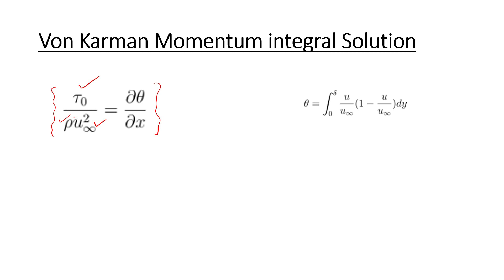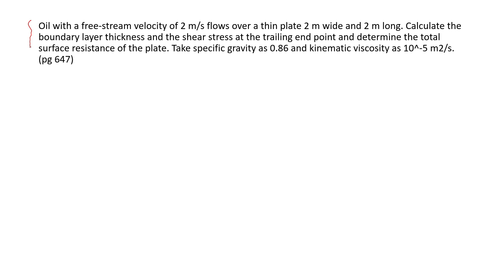Now let us do a problem based on Blasius' solution of a boundary layer. The problem is: oil with a free stream velocity of 2 m/s flows over a thin plate 2 m wide and 2 m long. Calculate the boundary layer thickness and shear stress at the trailing end point, and determine the total surface resistance of the plate. Take specific gravity as 0.86 and kinematic viscosity as 10^-5 m²/s.